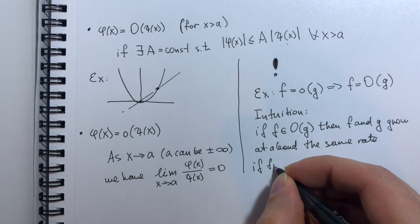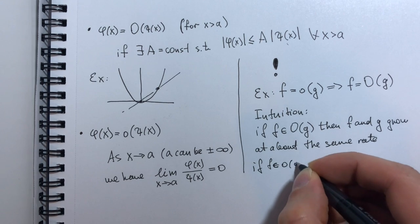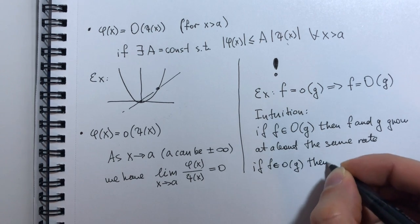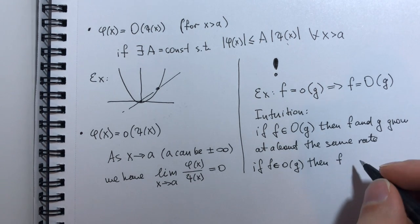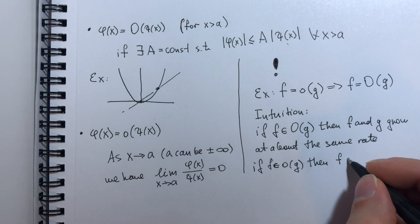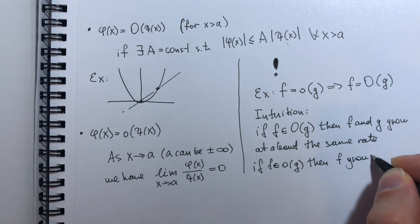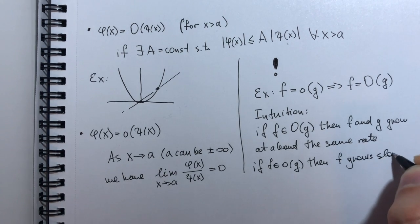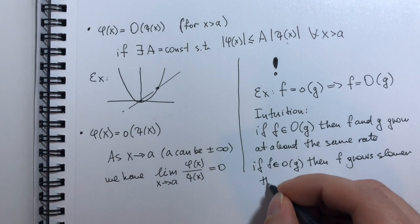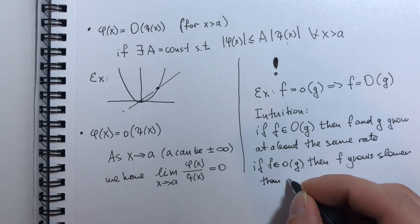But if F belongs to little o of G, then F grows slower than G.